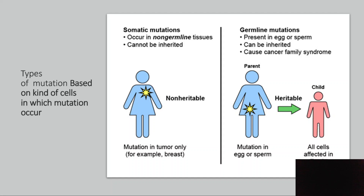What are somatic mutations? Somatic mutations are mutations which take place in your somatic cells. Somatic cells are every cell other than the cells present in your testes and ovaries — that is, your hair cells, skin cells, stomach layer cells, digestive cells, heart layer cells — all those cells are called somatic cells.